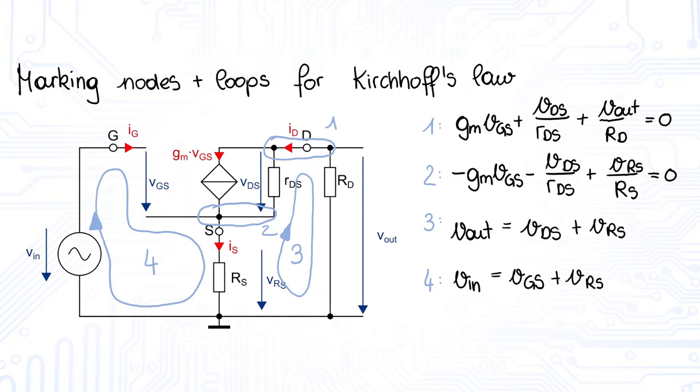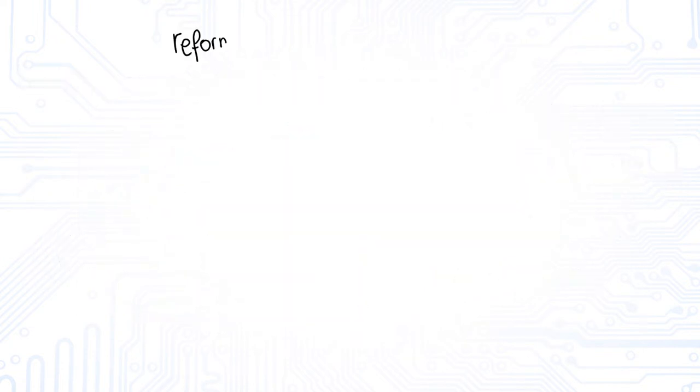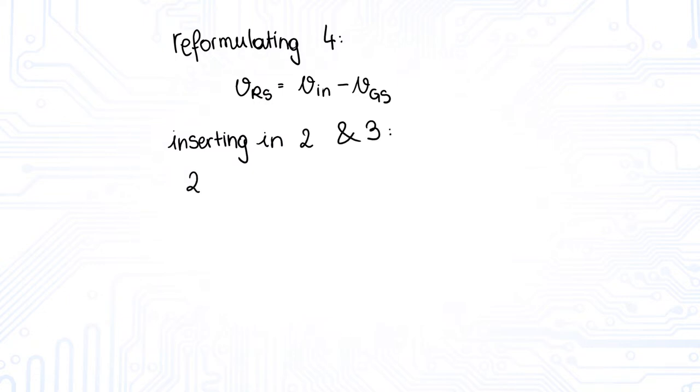To get the ratio of Vout to VIN, we have to do some reformulations of the equations and inserting one equation into the other. We are starting with equation number 4 and reformulate it to VRS. Afterwards, we insert the reformulated equation into equation number 2 and number 3.